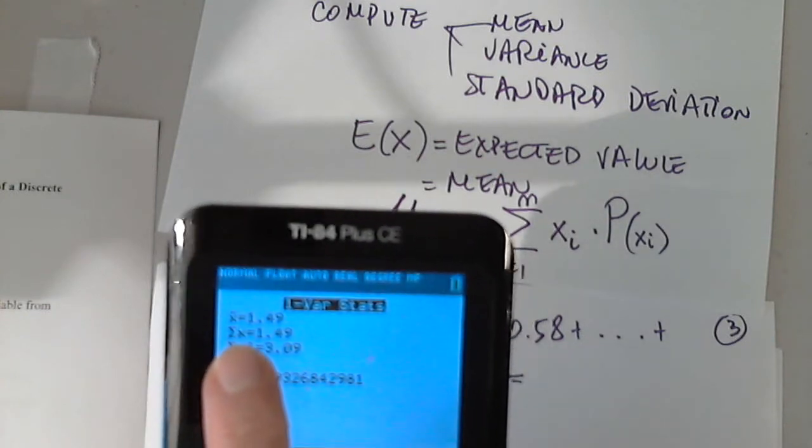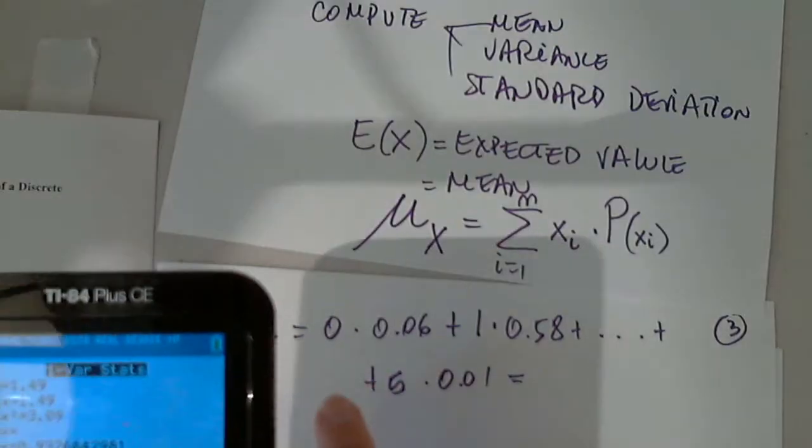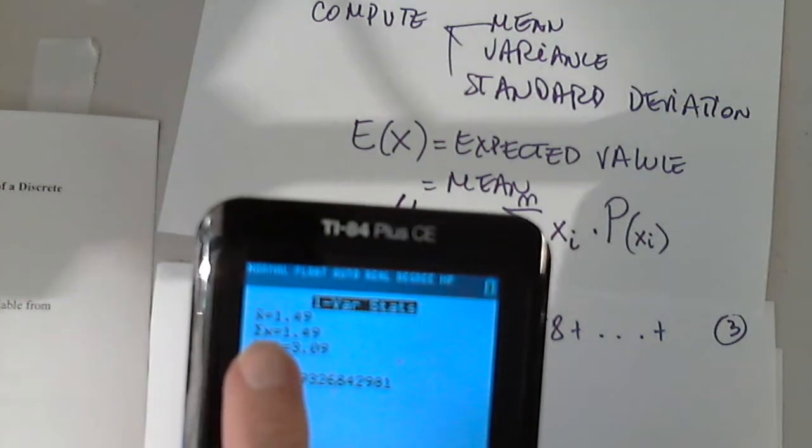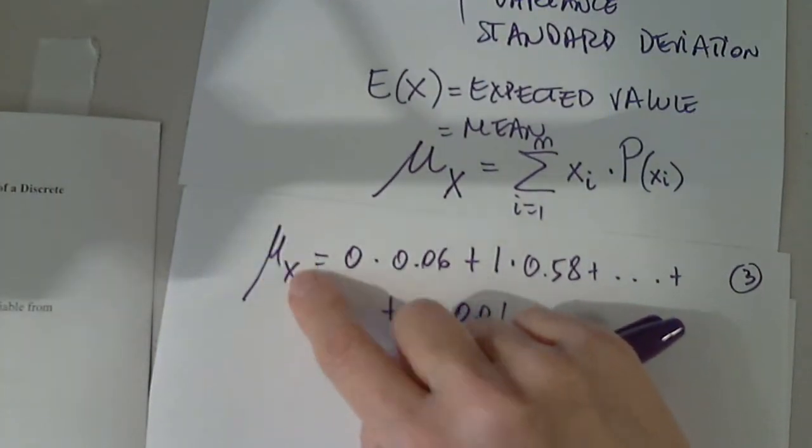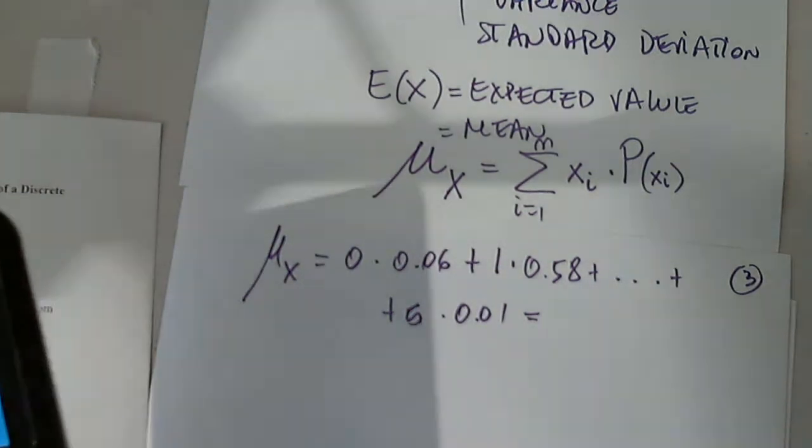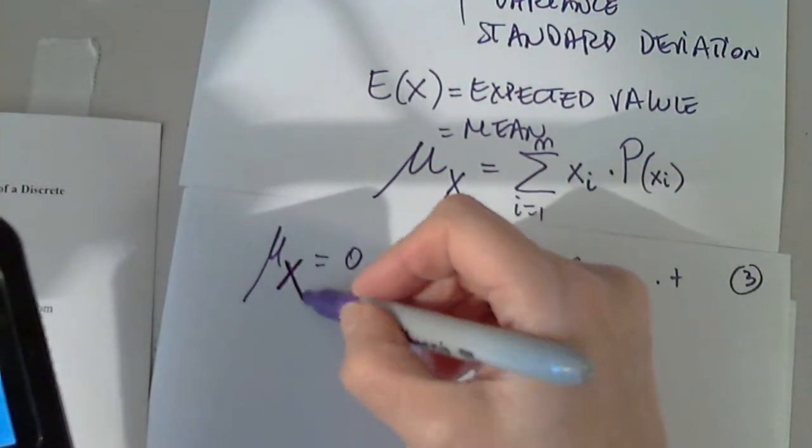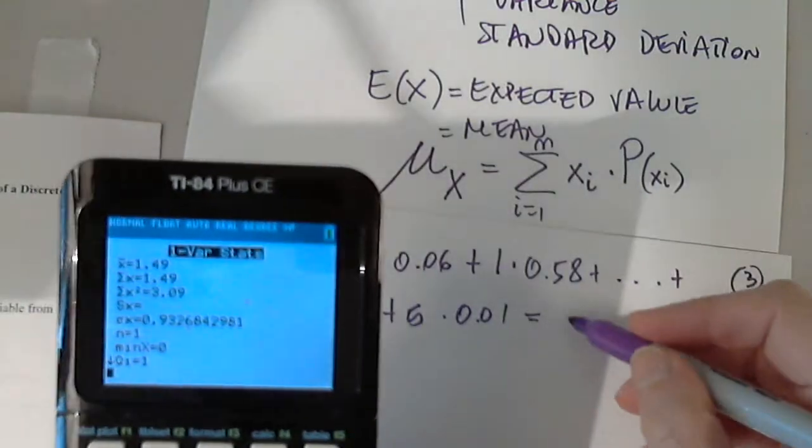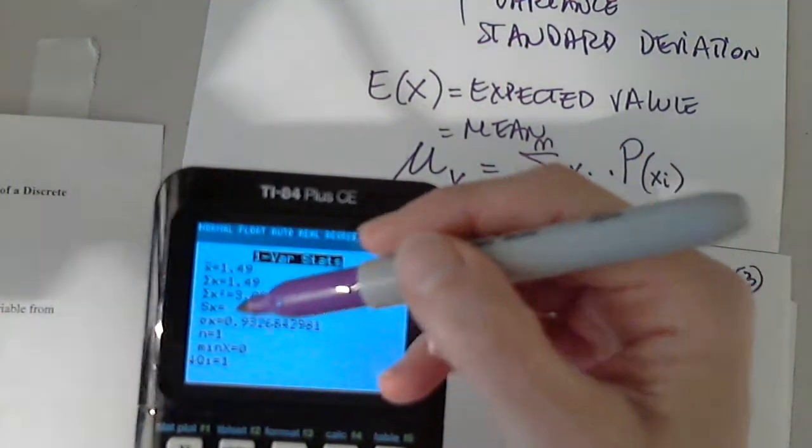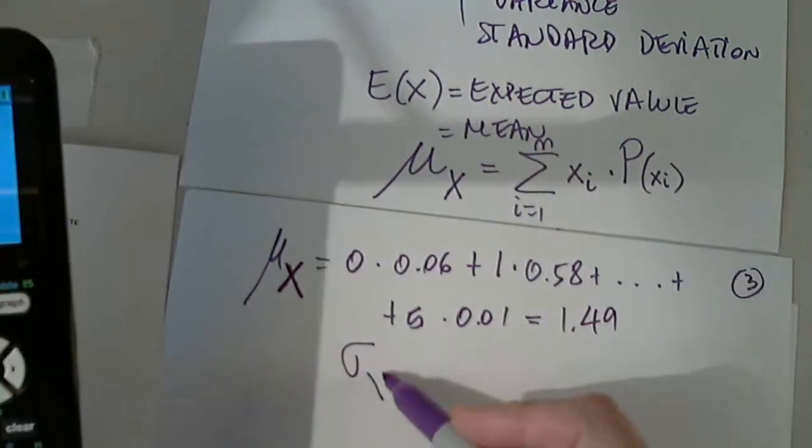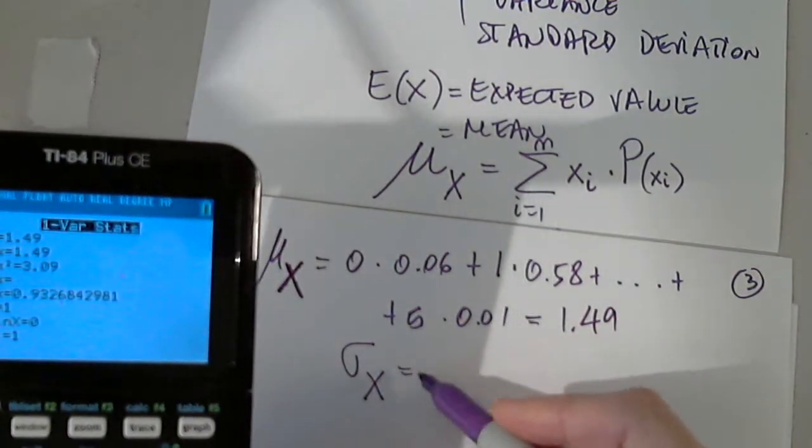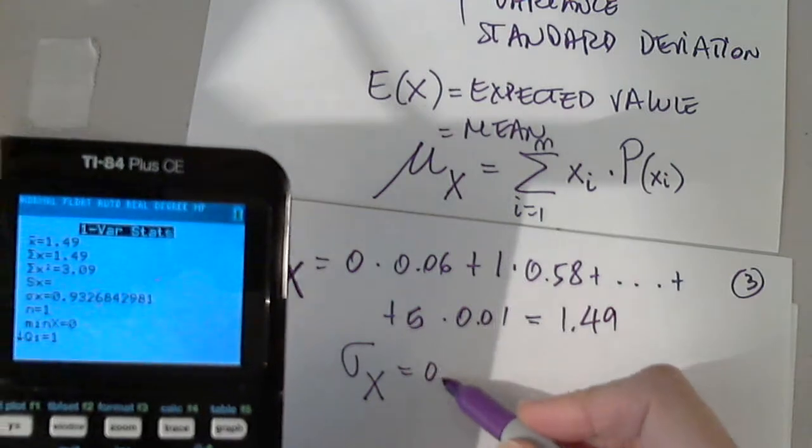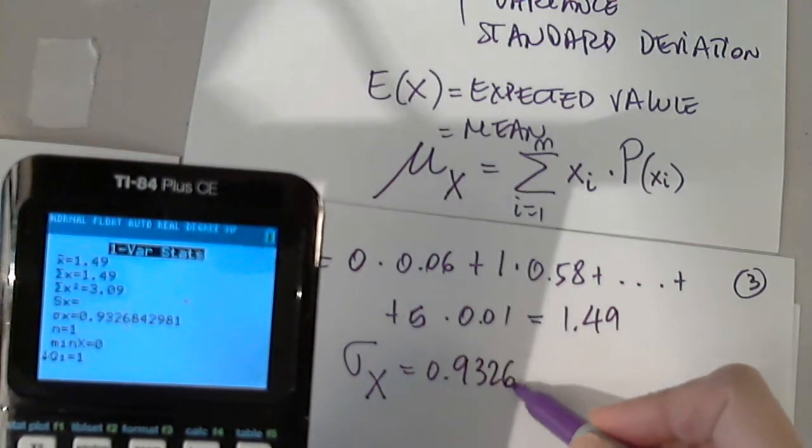And we are going to get X bar. But remember, this is X bar is the notation for the sample. But in this case, we have everything. I will not copy X bar. I have to copy mu. Mu of X. This X is uppercase. And I got 1.49. So I also copy sigma for uppercase X for the entire random variable, not for an outcome, of course. And this is 0.932684.